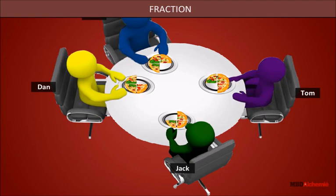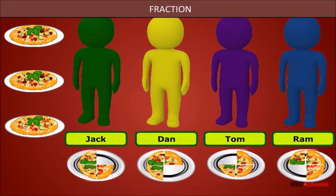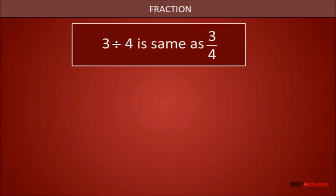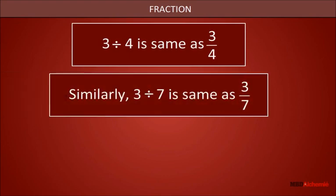As it is visible, the pizza is equally divided between the four guys. Therefore, we notice each of them gets three-fourths of a pizza. Thus, from this we understand that if we divide three things equally between four people, then each person gets three-fourths of it, or simply we can say that 3 divided by 4 is the same as 3 by 4. In a similar way, 3 divided by 7 is the same as 3 by 7, and 5 divided by 19 is the same as 5 by 19.